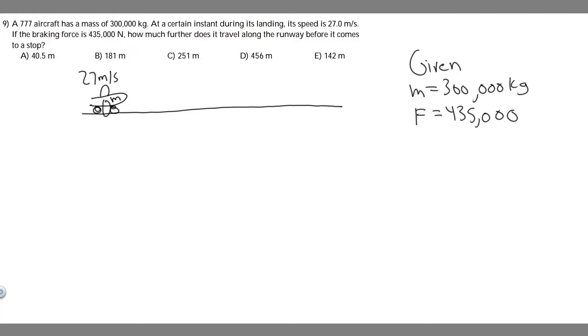In this problem, we're told a 777 aircraft has a mass of 300,000 kilograms. At a certain instant during its landing, its speed is 27 meters per second. If the braking force is 435,000 newtons, how much further does it travel along the runway before it comes to a stop?